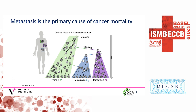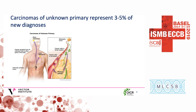Metastases typically contain additional mutations and often have a significant degree of phenotypic divergence from the primary. Most of the time when a patient is diagnosed with metastatic cancer, it's easy to figure out what the primary tumor is. But in about 3 to 5% of new cancer diagnoses, a patient presents with a metastatic tumor with no obvious primary — this constitutes a carcinoma of unknown primary, accounting for roughly 40,000 new cases per year in North America.